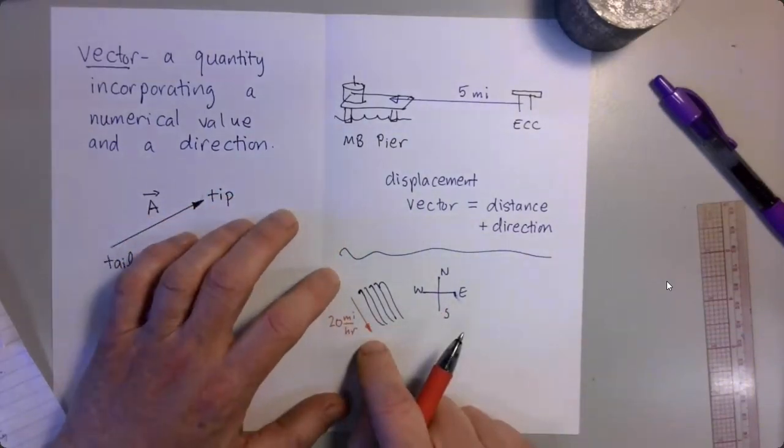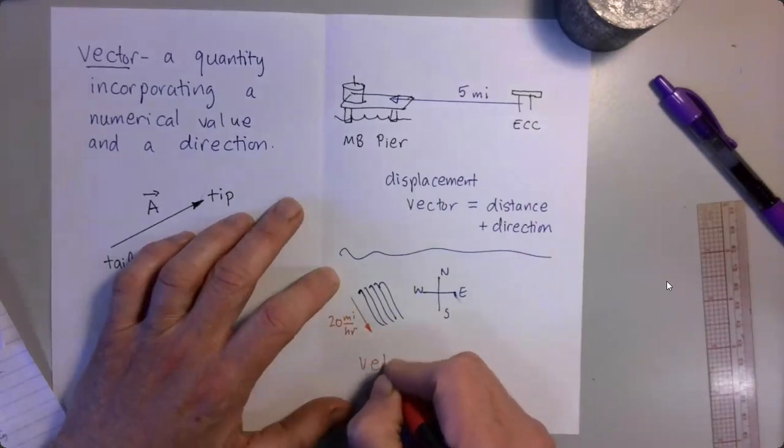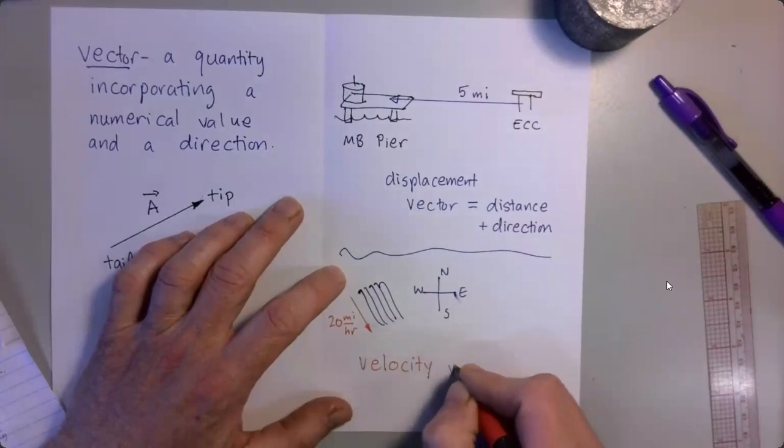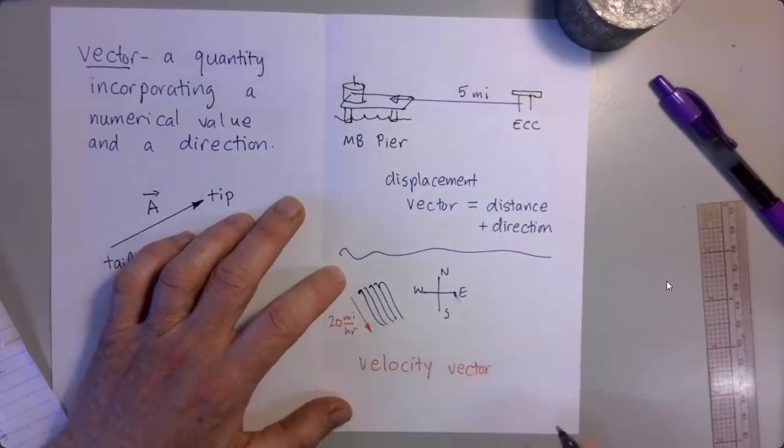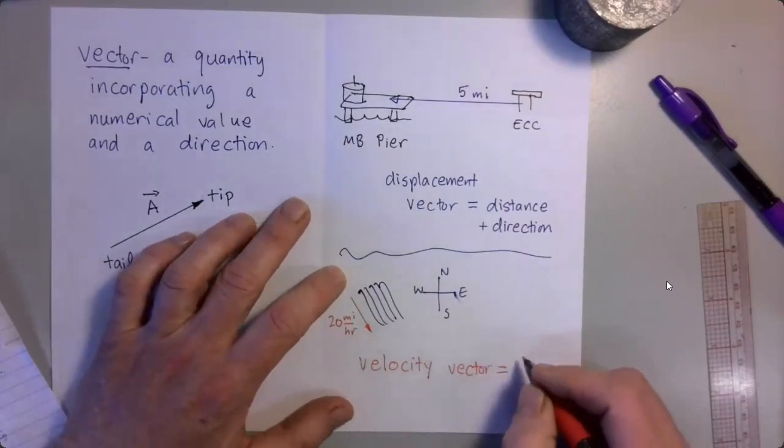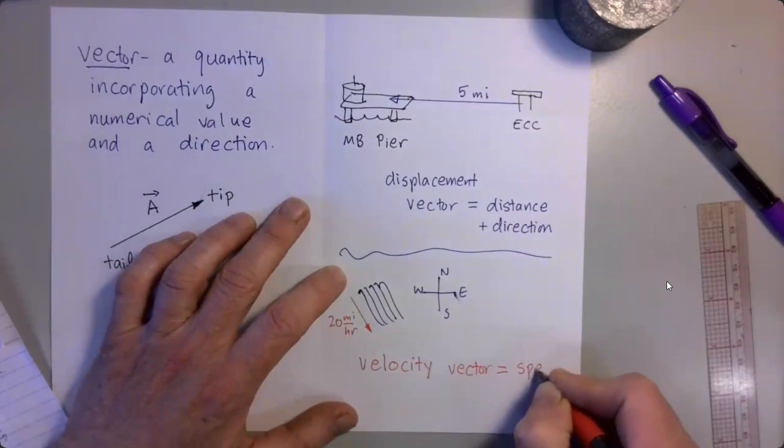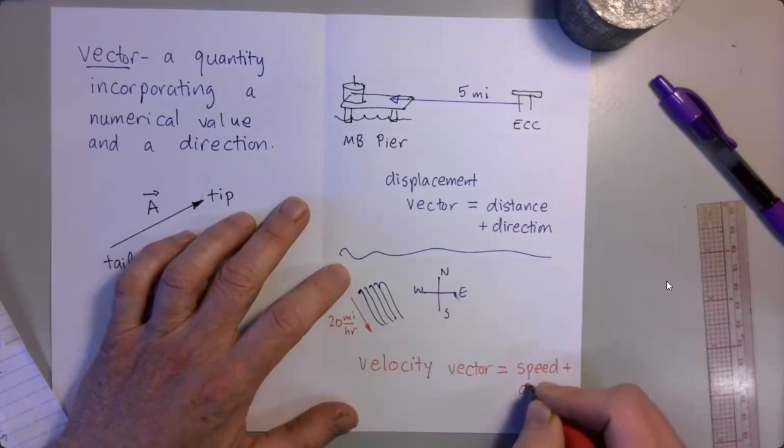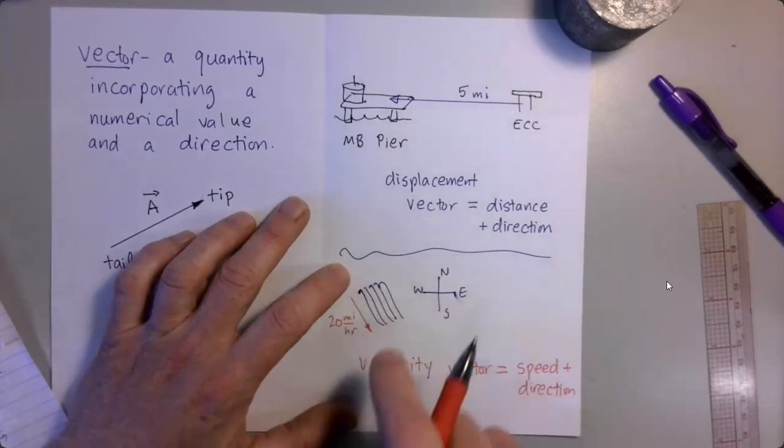This is an example of what we call a velocity vector. A velocity vector is a speed such as 20 miles per hour, such as northwest to southeast.